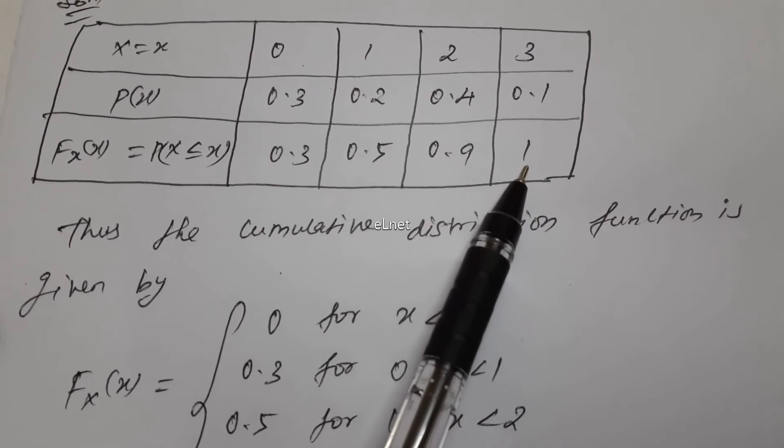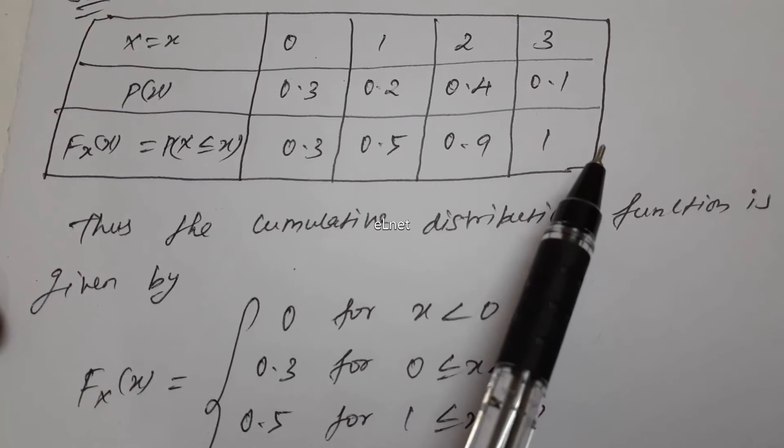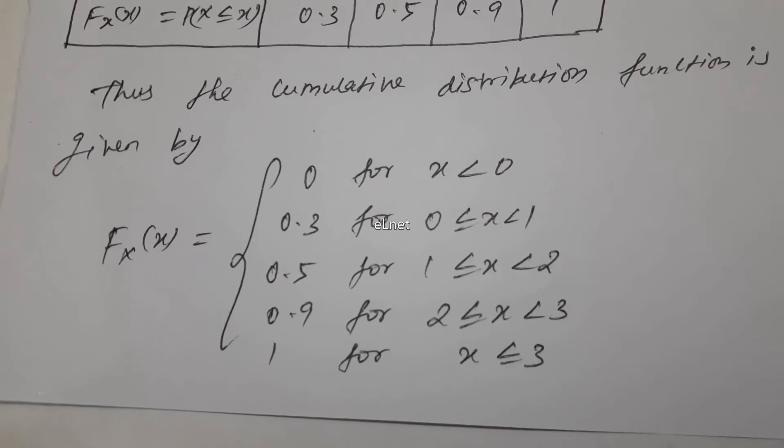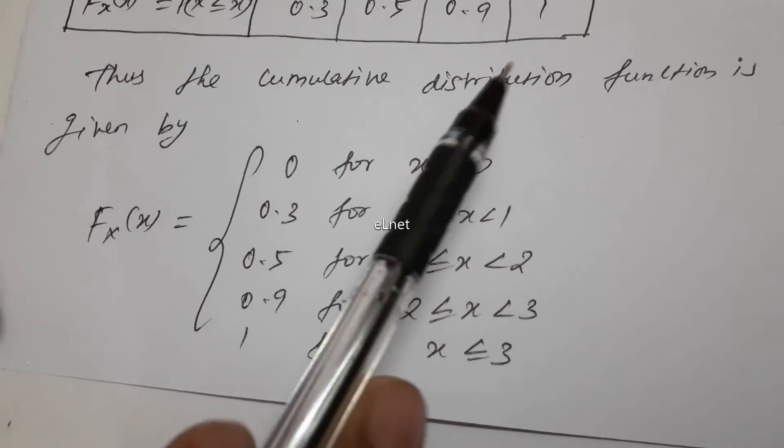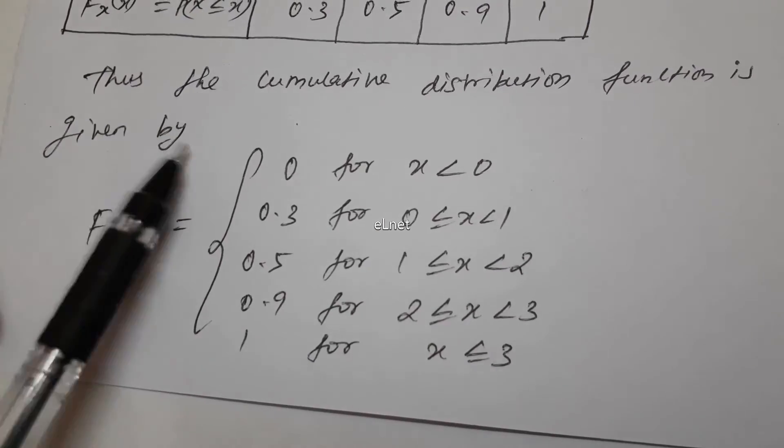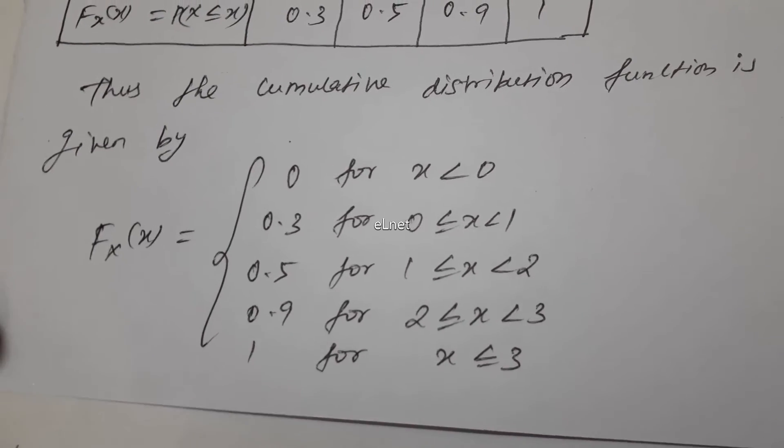Therefore, the cumulative distribution function value equals 1. Thus, the cumulative distribution function is given by F(x) with the following conditions: